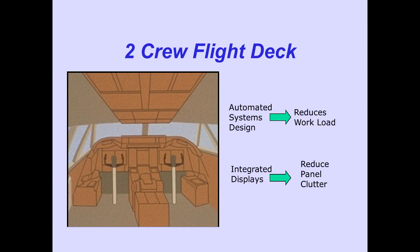The 747-400 is a long-range intercontinental jet transport with a two-man crew flight deck. Automated systems design reduces crew workload, and the integrated displays reduce instrument panel clutter.